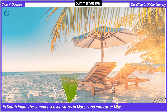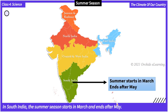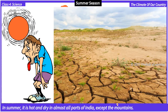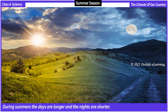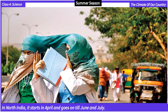Summer season: In South India, the summer season starts in March and ends after May. In North India, it starts in April and goes on till June and July. In summer, it is hot and dry in almost all parts of India except the mountains. During summers, the days are longer and the nights are shorter.